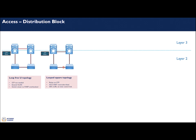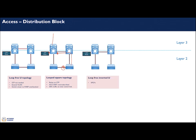The next option is the loop-square topology, which has a loop so spanning tree is required to avoid loops — not all links are used, and some are blocked. Importantly, with the STP root here, traffic may cross inter-distribution links before exiting, which is suboptimal. Then there is the loop-free inverted U: all links are Layer 2 but there is no loop; however, it has a single point of failure — if a link or distribution switch fails, all hosts on that switch lose connectivity.